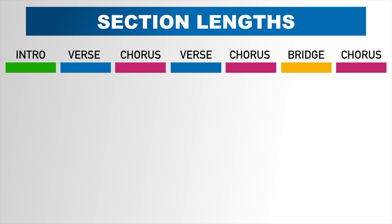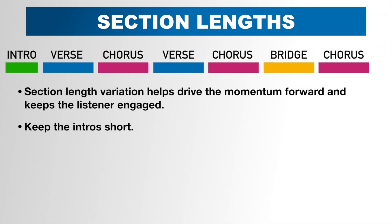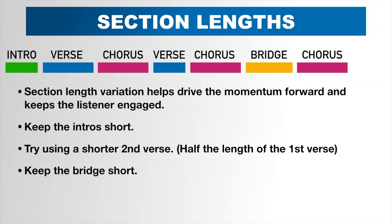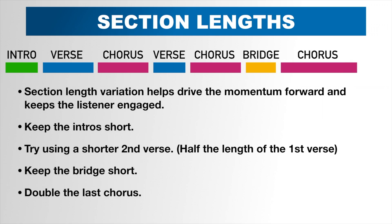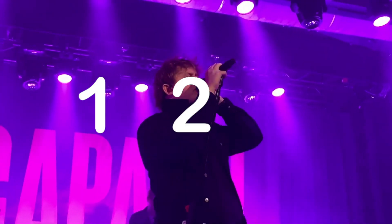Equally as important is the length of each section. Playing around with the length can help drive the momentum forward and keep the listener engaged by emphasizing certain sections while de-emphasizing others. Some common tactics that work well include keeping the intro short, experimenting with a second verse that's half the length of the first, keeping the bridge short, and doubling the last chorus to emphasize the best part of the song. Attention spans are getting shorter and shorter, so cutting back on some sections to get to the hook or chorus faster is usually a good idea. It's not uncommon nowadays to see choruses used as intros to hook the listener right from the start — Lewis Capaldi's song Grace is a great example, with an intro that's a grand total of three measures.